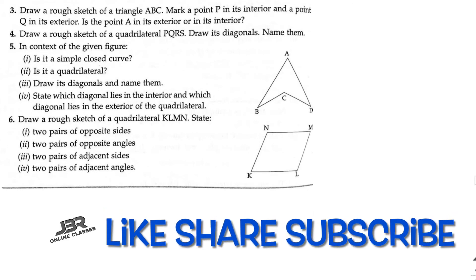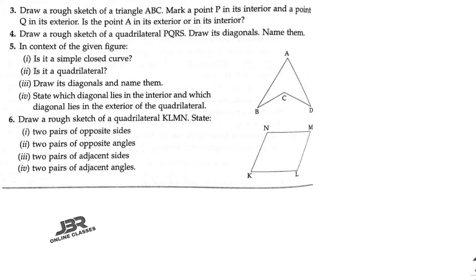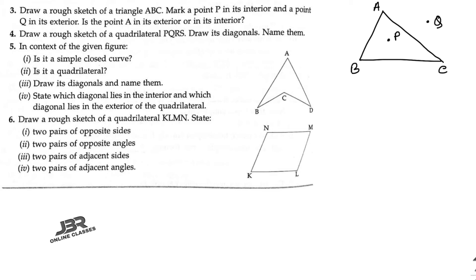Sum number three: draw a rough sketch of triangle ABC. Mark a point P in its interior and a point Q in the exterior. Is the point A in its exterior or interior? The point A is neither the exterior point nor the interior point, because point A lies on the boundary of triangle ABC.